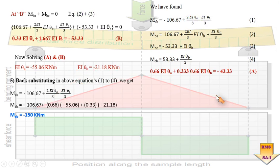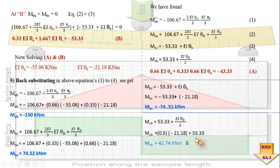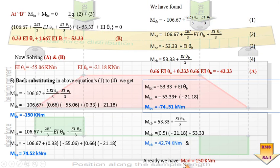After obtaining theta A and theta B, we simply substitute these values into equations one through four to get the final moments. Substituting into equation one gives MAB equal to minus 150 kN. Substituting into equation two gives MBA. Similarly, substituting into equations three and four gives MBC and MCB. MAD was already found. So all final moments — MAB, MBA, MBC, MCB, and MAD — are now determined.